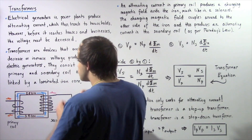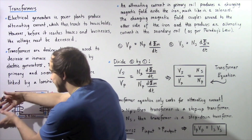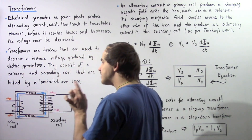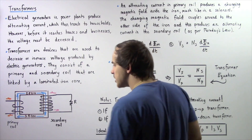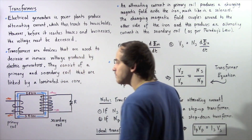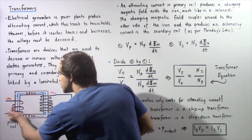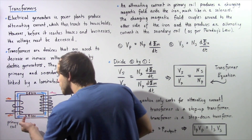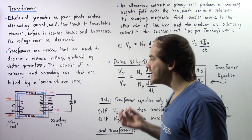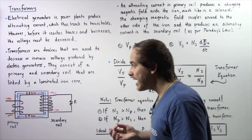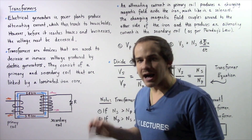The electric generator creates that alternating electric current, which then travels through the wire, eventually reaching the primary coil. As that changing electric current passes through the loops of wire, it essentially creates a changing magnetic field, in the same way that a magnetic field is created inside a solenoid.